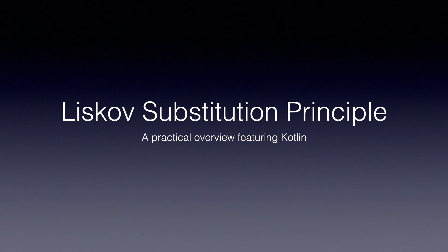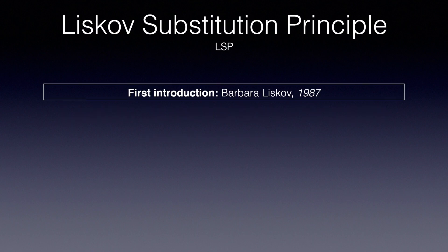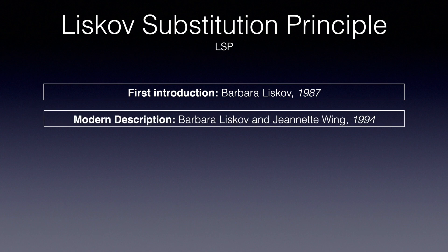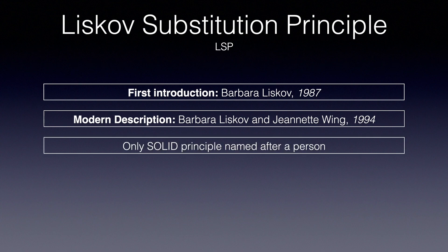The Liskov substitution principle is named after Barbara Liskov, an Institute professor at MIT and Turing Award winner, which is the highest distinction of computer science. It was first introduced by her in 1987. Along with Jeannette Wink, they described the principle more thoroughly in 1994. Fun fact: it's the only principle that has the name of the person who invented it.